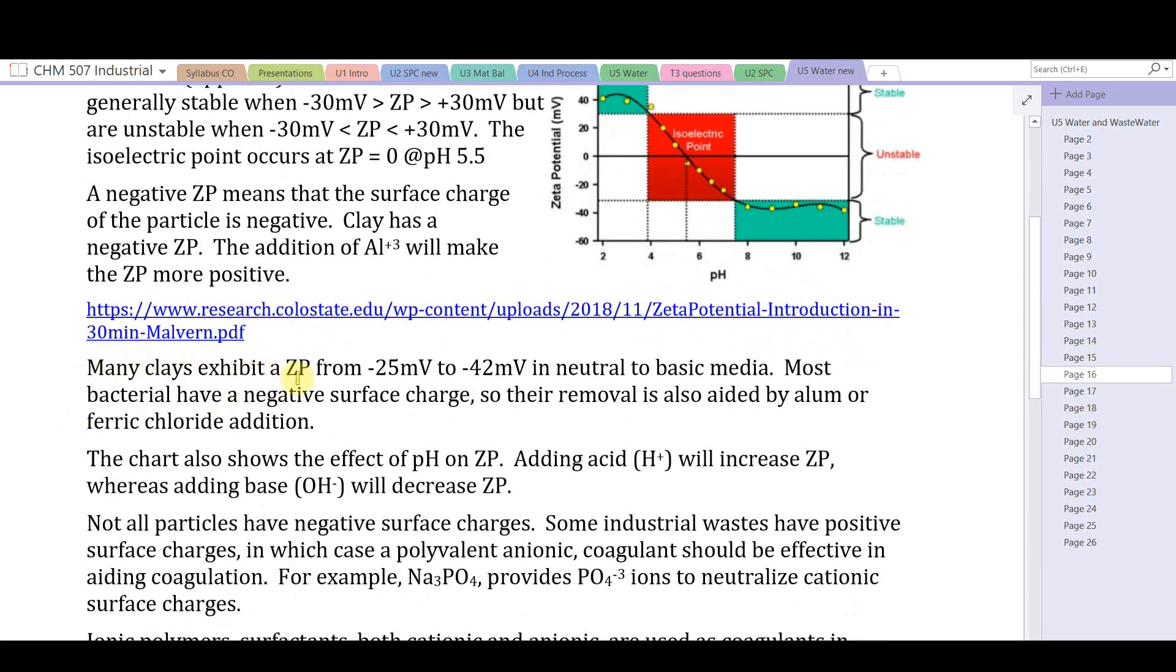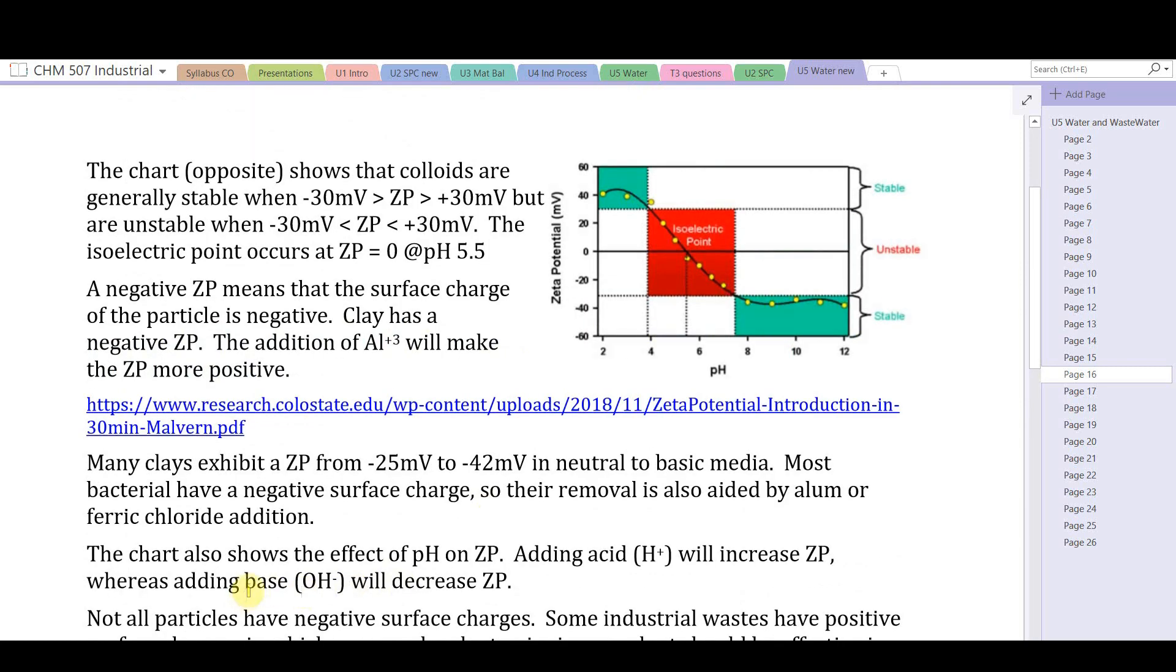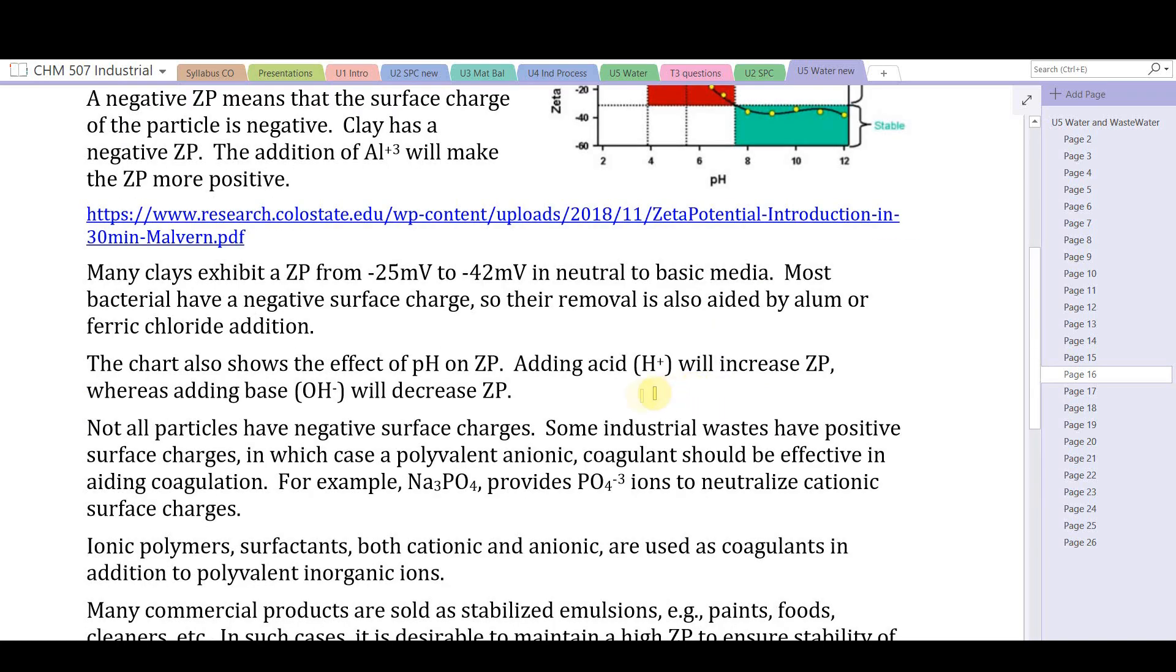Many clays exhibit a zeta potential from -25 to -40 millivolts in neutral to basic media. Most bacteria have a negative surface charge, so their removal is also attained by alum or ferric chloride addition. The chart also shows the effect of pH on zeta potential. Adding acid will increase zeta potential, whereas adding base would decrease it. So you have two factors to adjust.